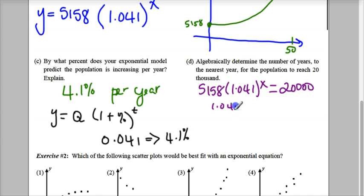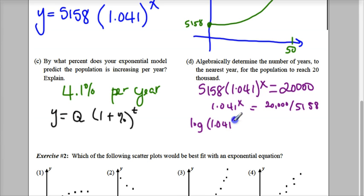So this becomes 1.041 to the X. I want to get rid of that. So I'll divide it by, divide the 20,000 by the 5158. Now, because of this here, because of the exponent, I want to do the, let's just take this out so I can get some space. I need to solve for X. X is in the exponent, so I'm going to do the log of 1.041 to the X power is equal to the log of 20,000 over 5158.